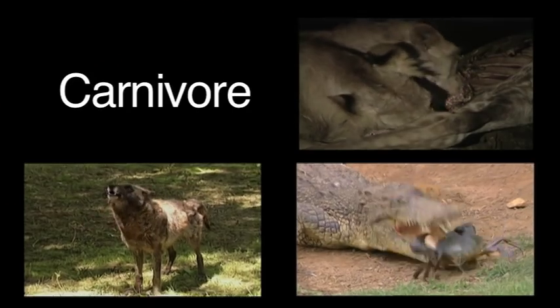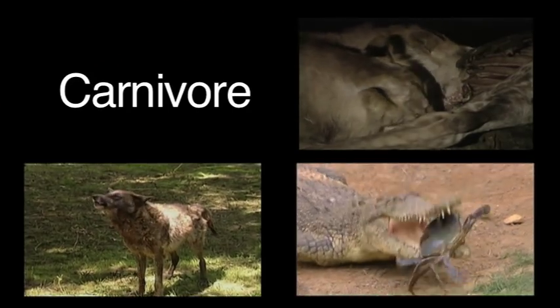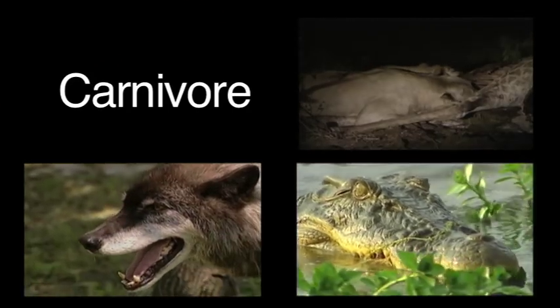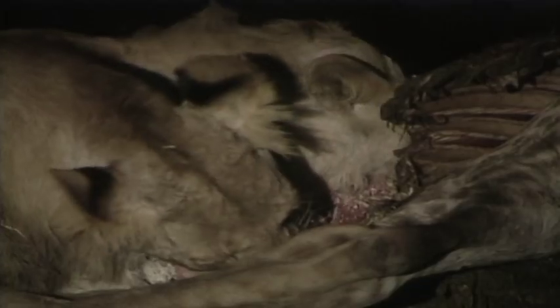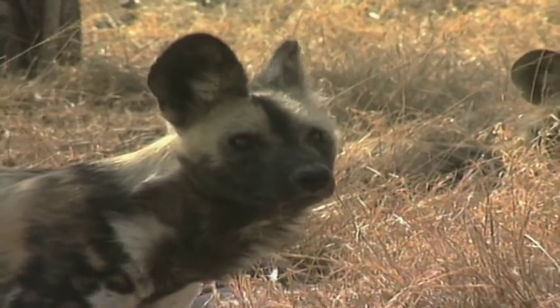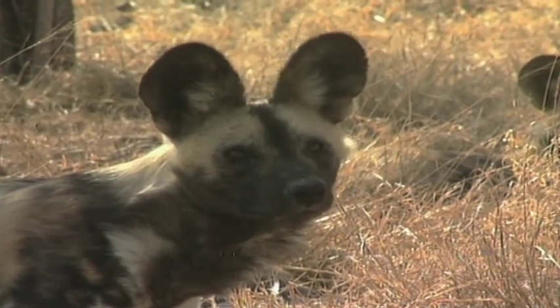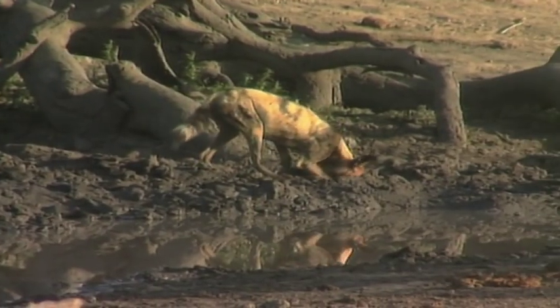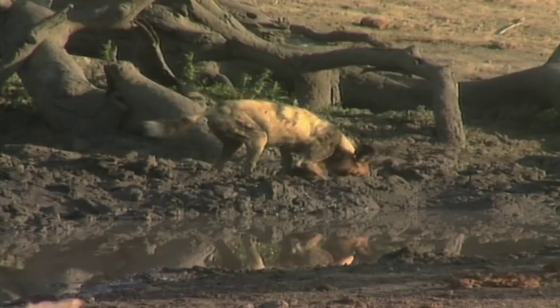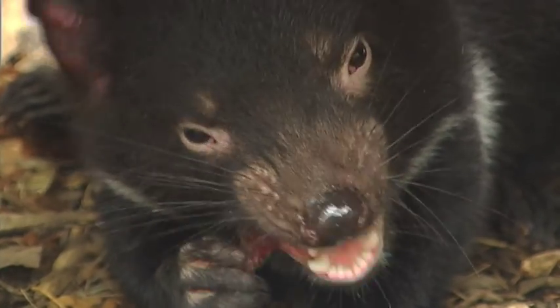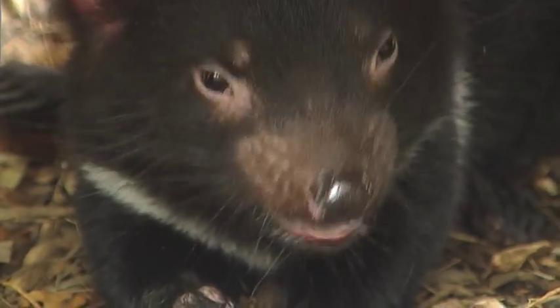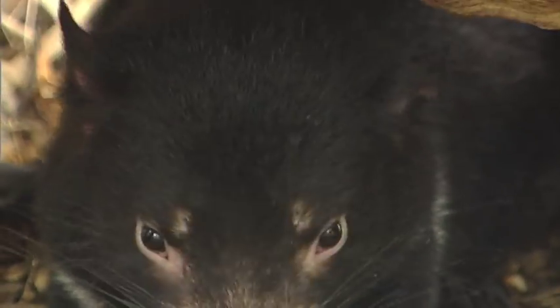A carnivore is an animal that mostly feeds on meat. Some carnivores, such as lions, stalk and kill their prey, while other carnivores, such as hyenas, search for already dead carcasses to feast on. Carnivores need very sharp teeth and strong jaws for tearing meat from the bone.